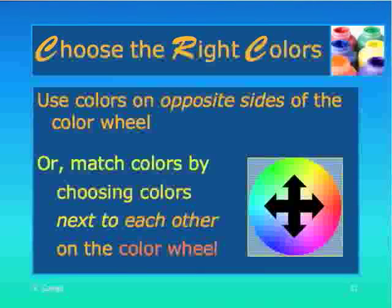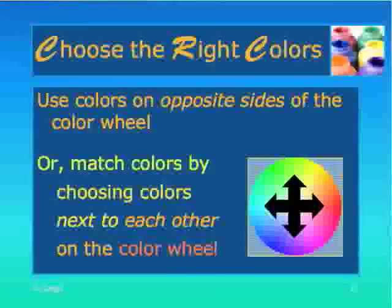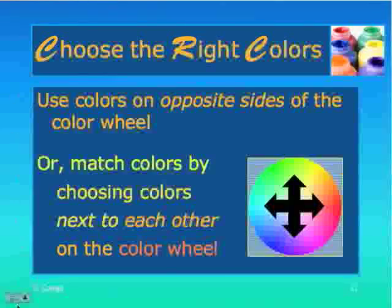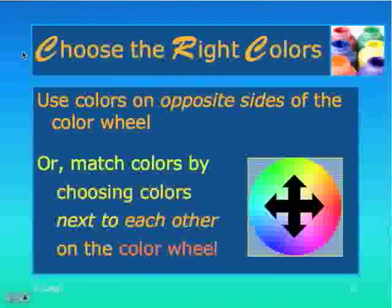Choose the right colors — use colors on the opposite side of the color wheel for your layout, or match colors by choosing analogous colors that are next to each other on the color wheel. They go very well together, as this background illustrates. And this is the example of that solid color background I was talking about — it works very well to make your text very readable.